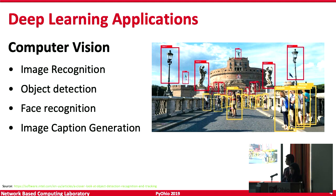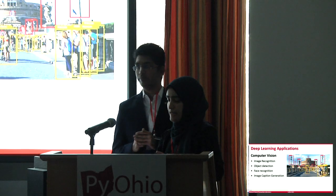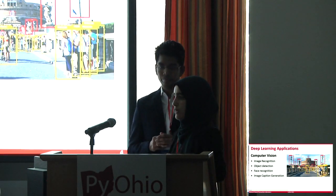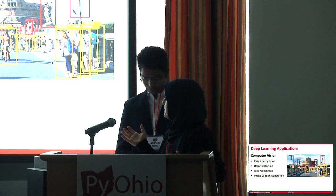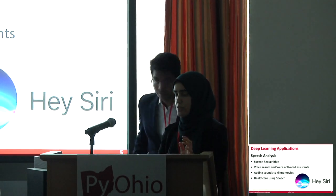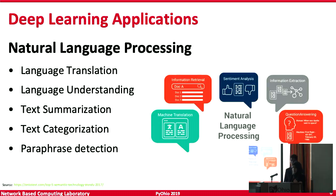Some examples of deep learning applications fall into different categories. Computer vision is how a computer gets a high-level understanding from images or videos — things like image recognition, object detection, and face recognition. In this image, it's not only identifying what the image is but also classifying it: red for objects and yellow for people. Another example is speech analysis, found in Hey Siri, OK Google, and Alexa, which uses audio and analyzes patterns to detect what's being said using human language.